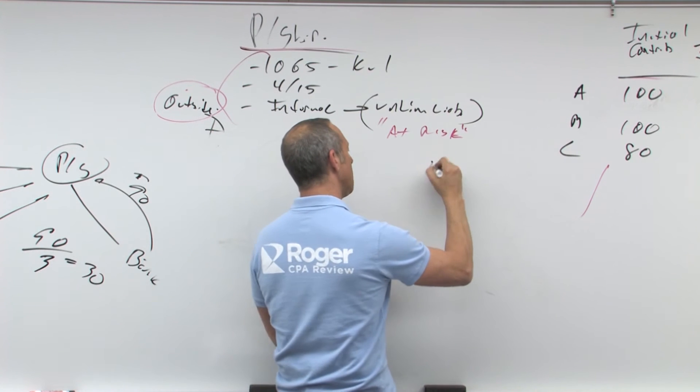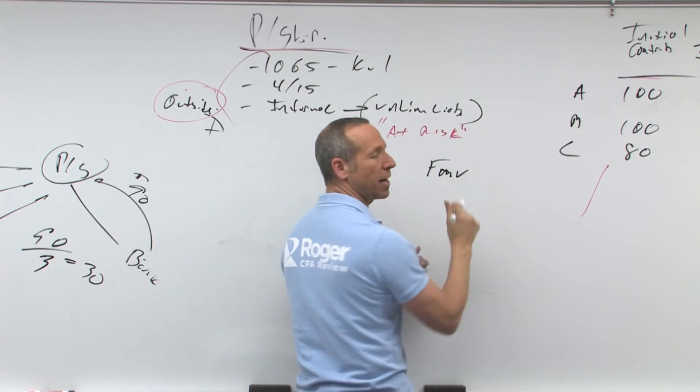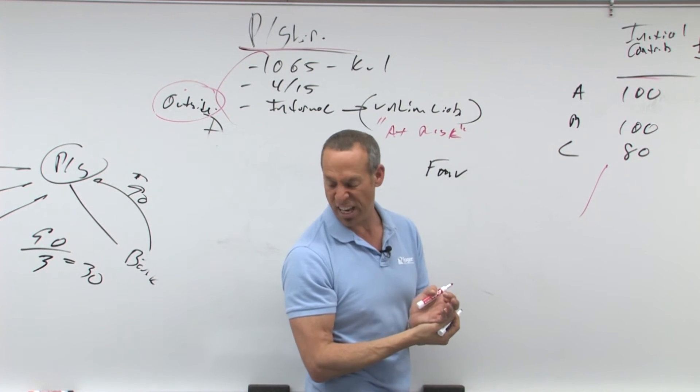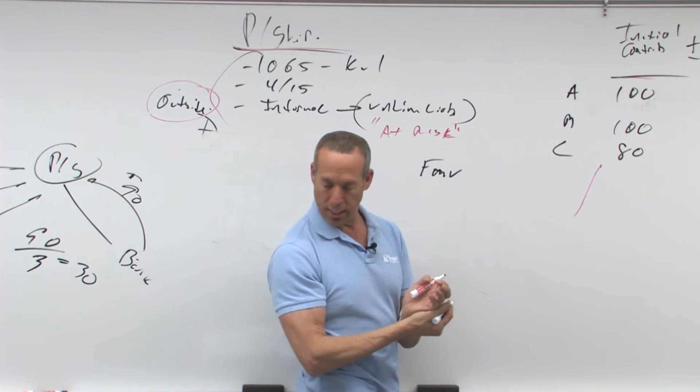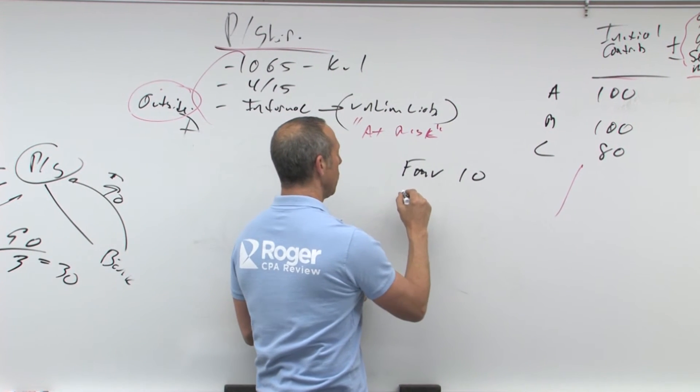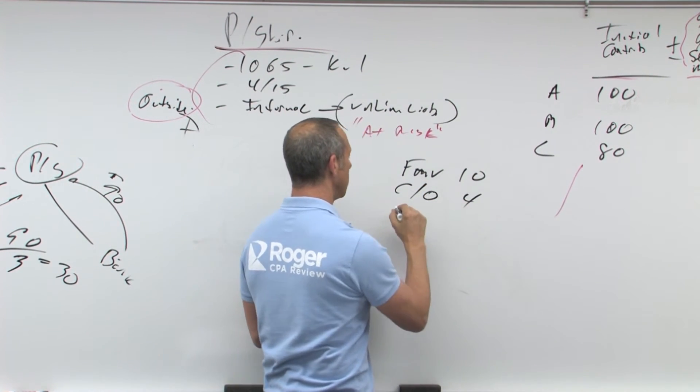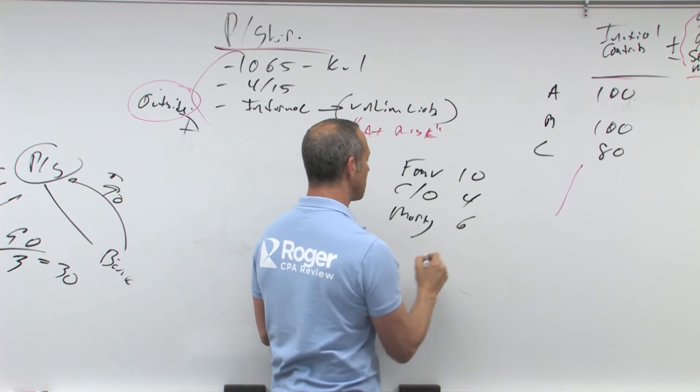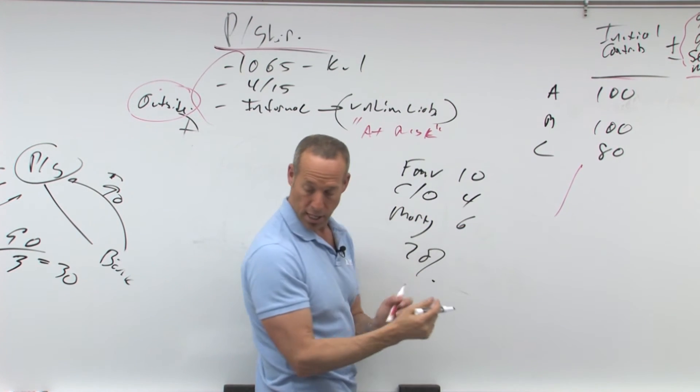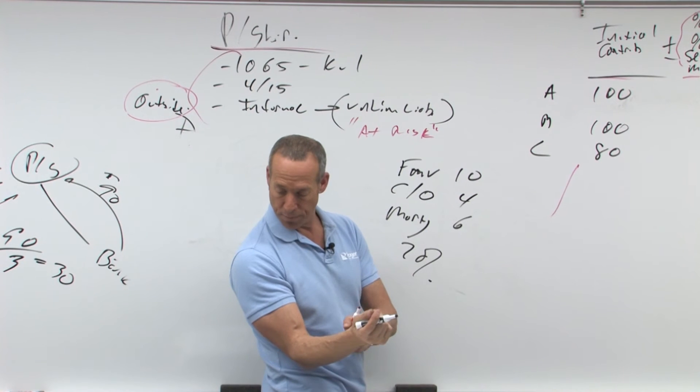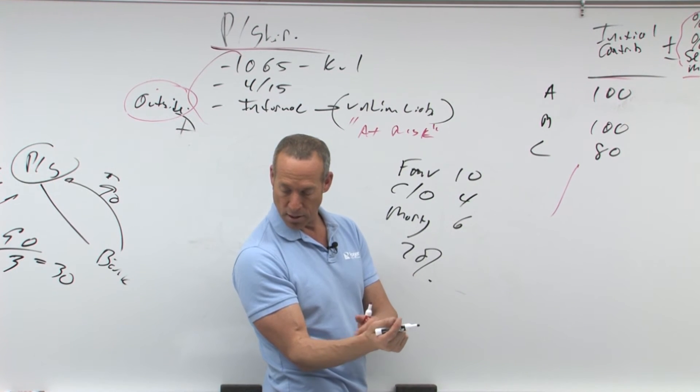All right. We've got fair market value, even though you're all saying to yourselves, forget about it. Fair market value is 10. We have a carryover basis of four, subject to a mortgage of six, and we're getting 20%. Let me make sure I got these numbers right.